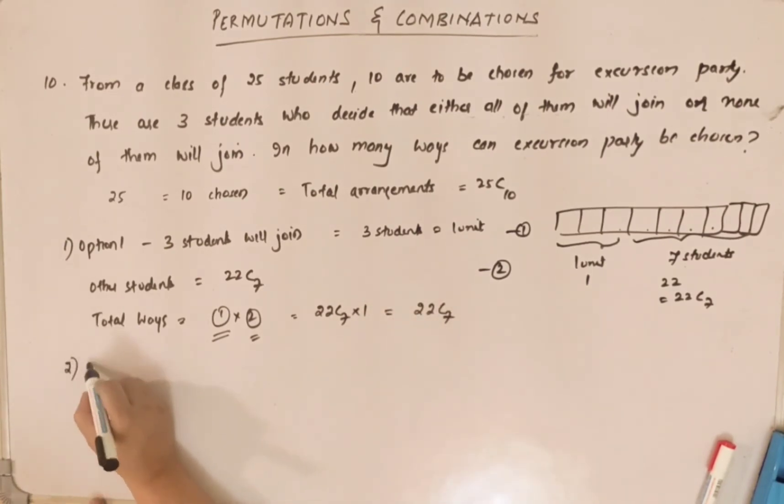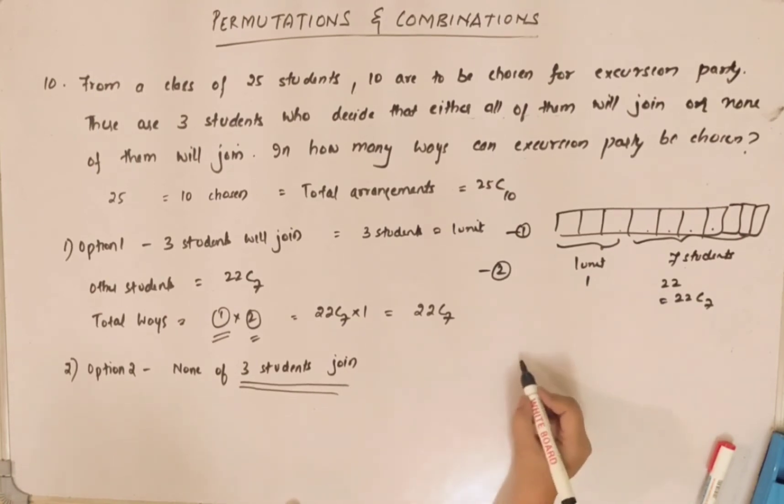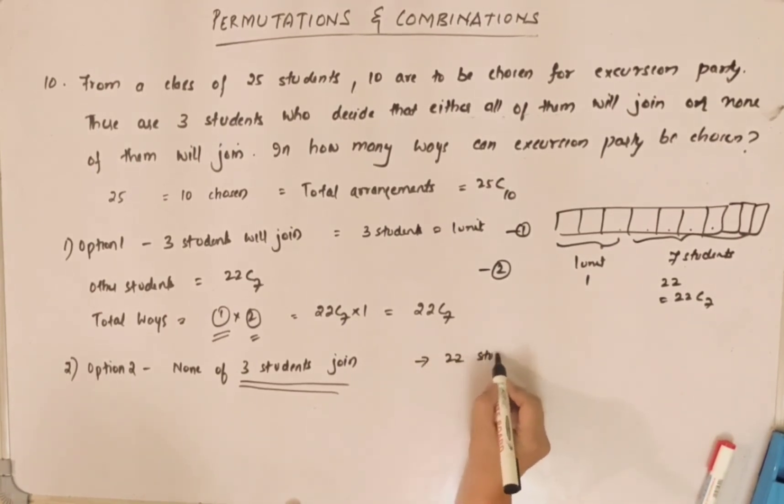Now there is option two. None of the three students join. So if they don't join, then what is the number of students left? We'll have 22 students left because three students are not joining. And out of 22, how many do you have to choose for excursion? 10 students. So what is the combination? 22C10.